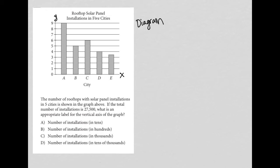So we see we have some letters here for the cities, and then we have some numbers here on the y-axis that represents, looks like based upon the title, rooftop solar panel installations, right?